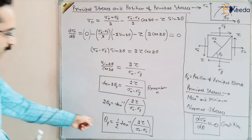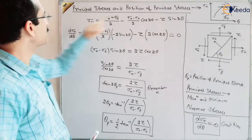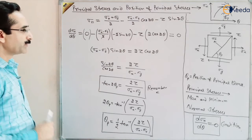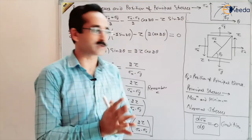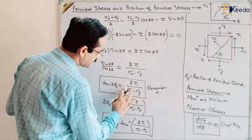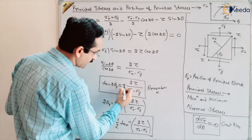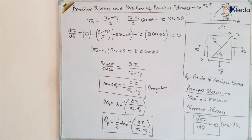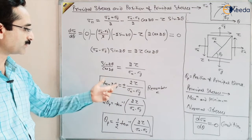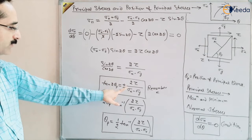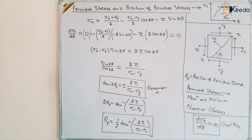If we put this theta value in the sigma n equation — which is our basic equation — whatever normal stress we get, that will be the principal stress. Because principal stresses are maximum and minimum stresses and we differentiated for maxima, there will be a minima also. That is why we are writing plus and minus: plus gives the maxima and minus gives the minima. So, plus and minus show there is a maximum and minimum where the principal stress is acting — one is the maximum stress, another is the minimum stress.